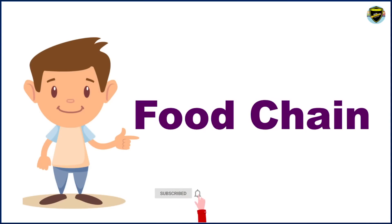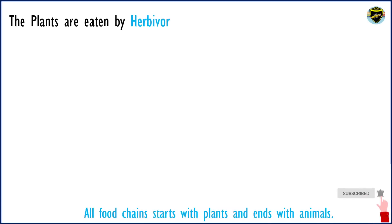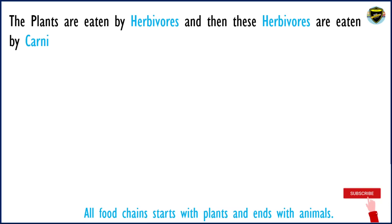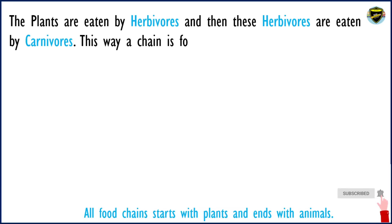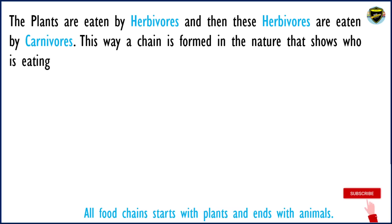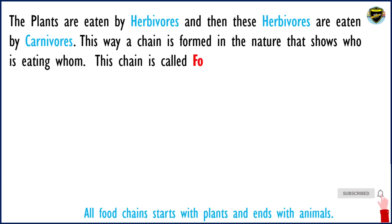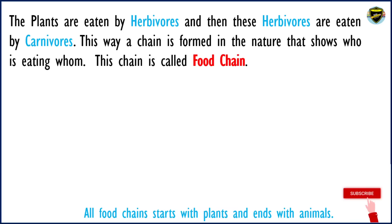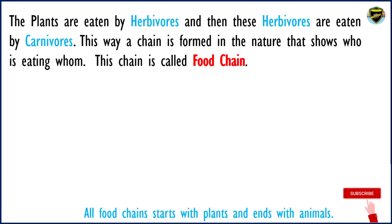Now we will come to this point — what is a food chain? The plants are eaten by herbivores, and then these herbivores are eaten by the carnivores. This way, a chain is formed in nature that shows who is eating whom. This chain is called a food chain. All food chains start from plants and end with animals.